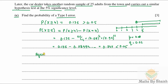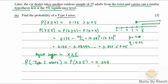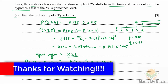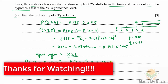So the probability of a Type 1 error is 0.0451. That's it for this video — it was the last question. I hope it was of some help. Let's meet again in the next video. Thank you so much.